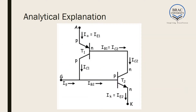Now let us observe analytically how this actually works. At first, when there is no gate current, there is no base current flowing through this transistor, so this transistor is off. Again, there is no base current flowing through this transistor either. Since this transistor is off, there is no current flowing through its collector, so this transistor is also off. That means no current flows from anode to cathode.